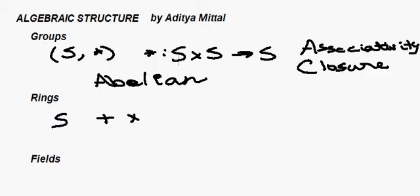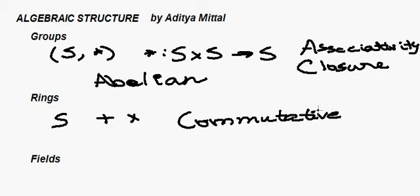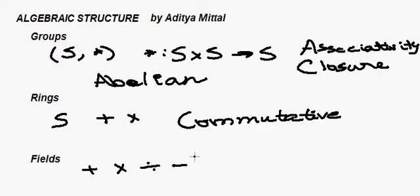Next, let's talk about fields. A field is a structure — and these are all types of algebraic structures we're talking about — under which the operations of addition, multiplication, division, and subtraction are all performed. A field, by definition, is a specific type of ring; it's a commutative ring.